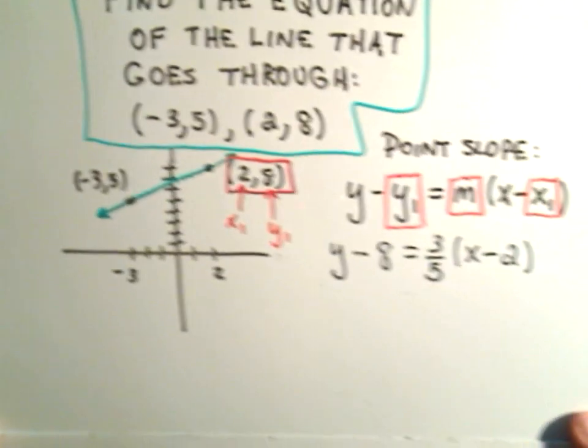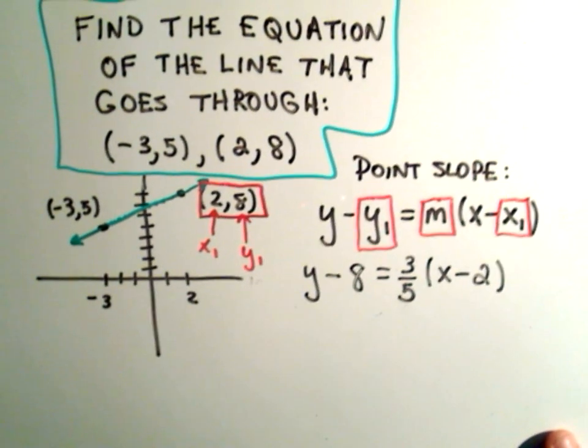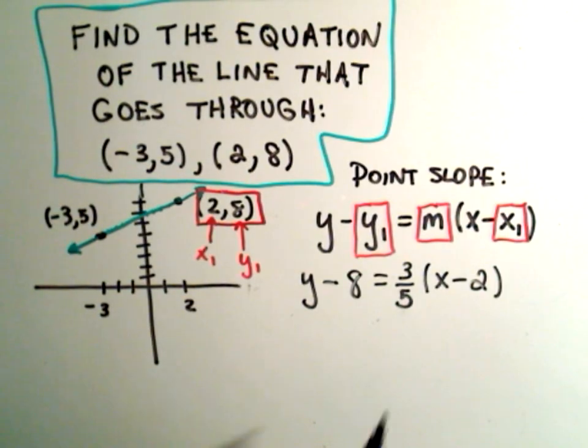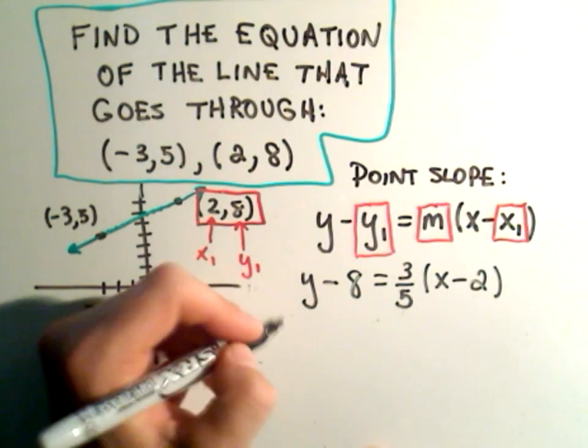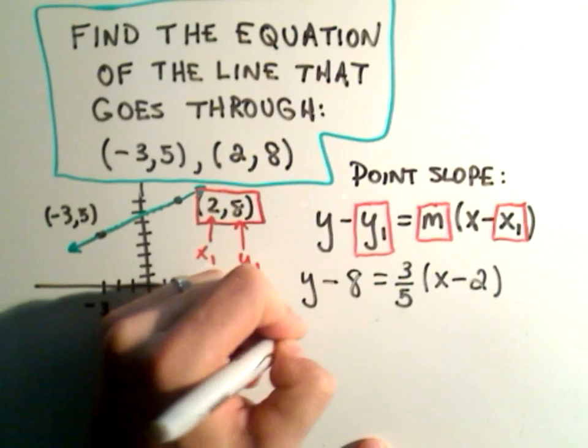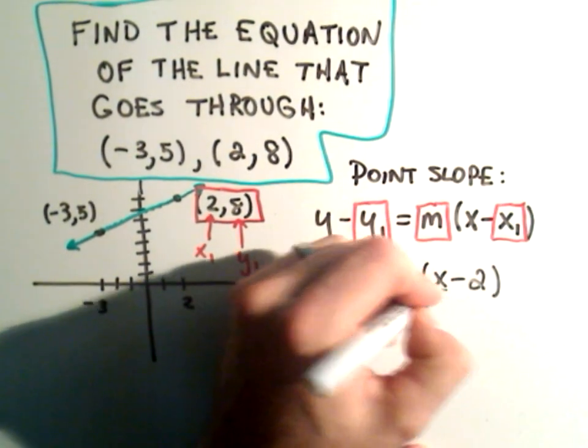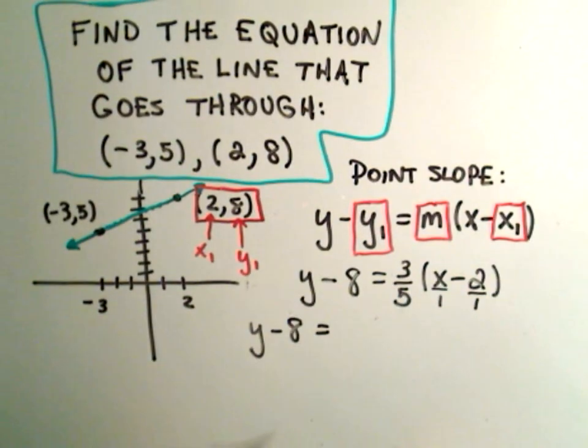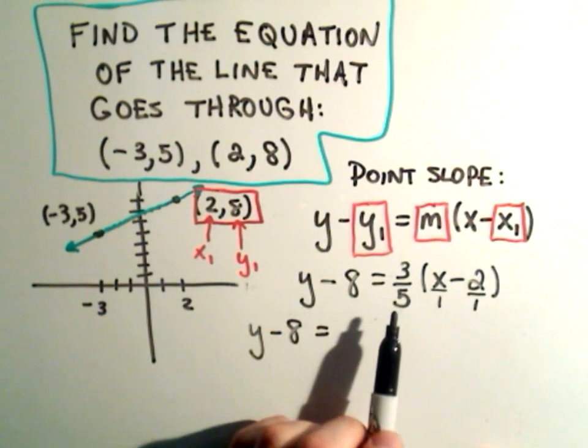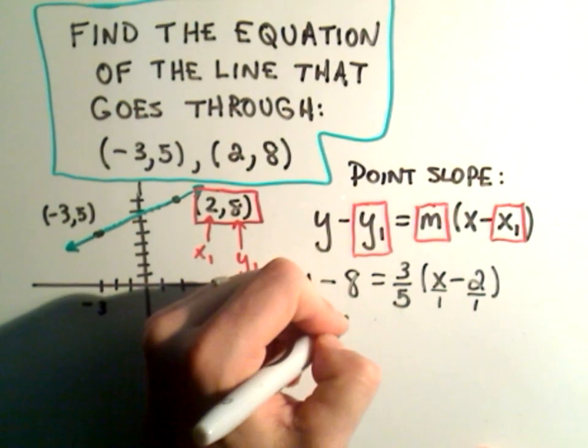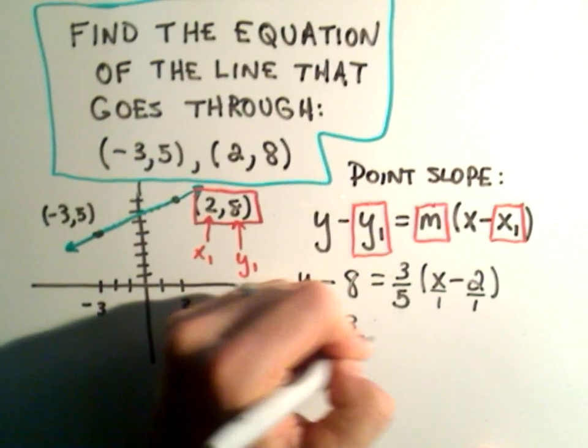A lot of people like to see this in y equals mx plus b form, or they feel like if they don't write it like that, they've done something wrong. So we can go ahead and simplify, or just move things around. So if I distribute on the right side, you can think about both of these as being fractions over 1. So if I take the 3 fifths times x over 1, I'll get 3 fifths x.